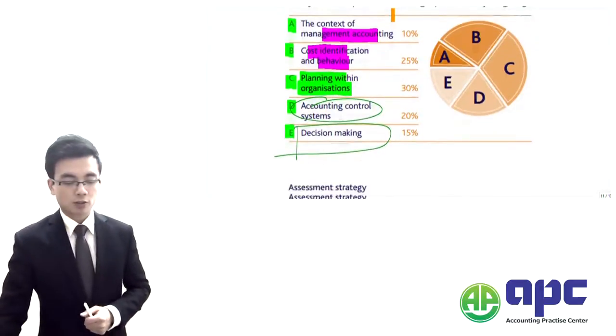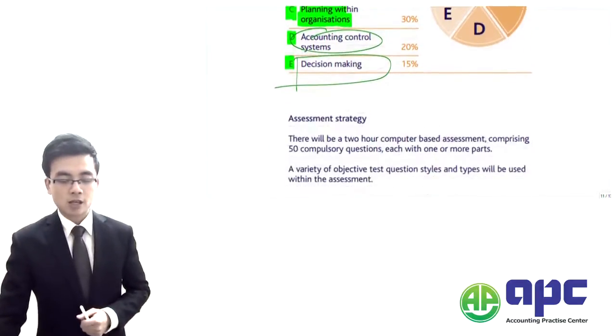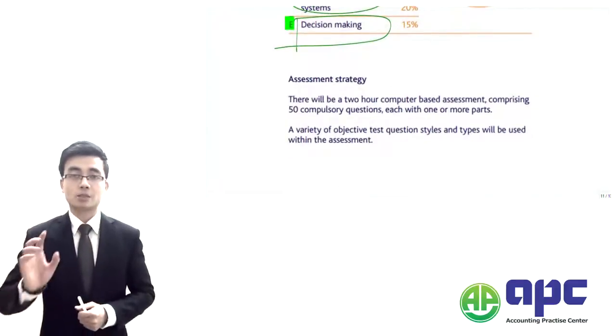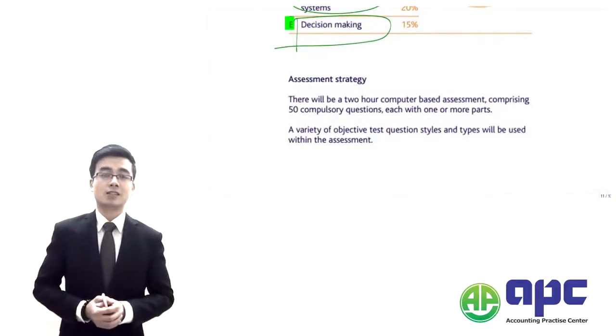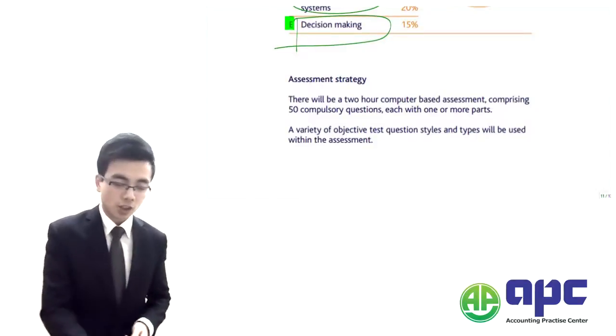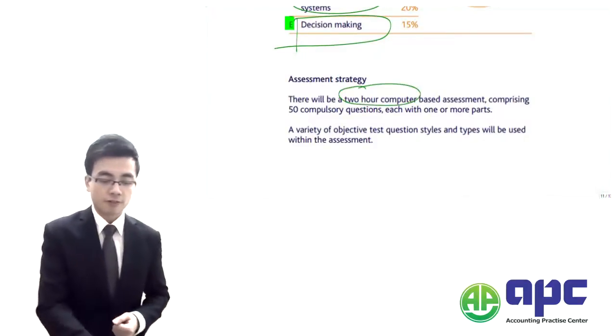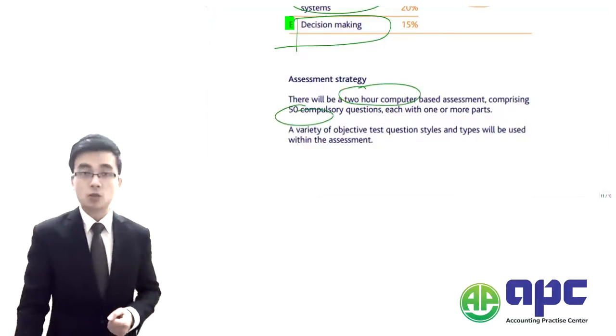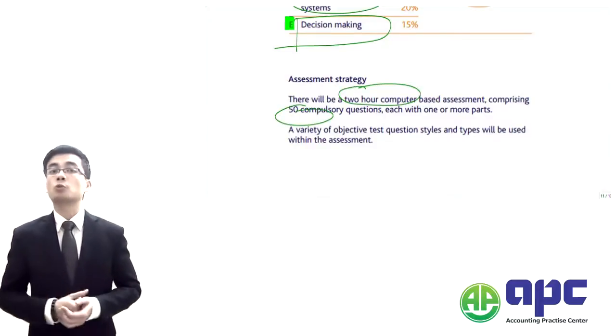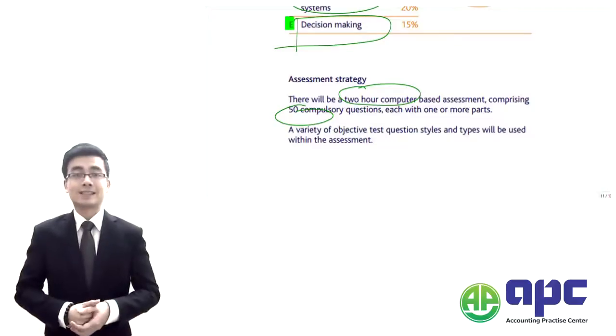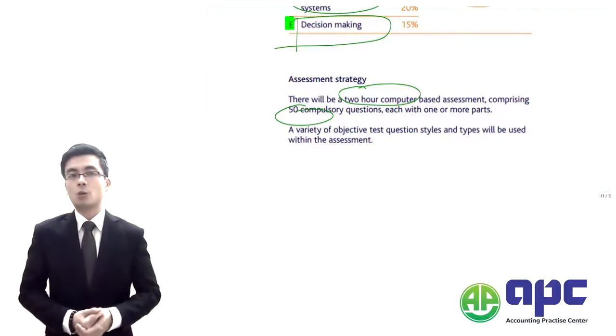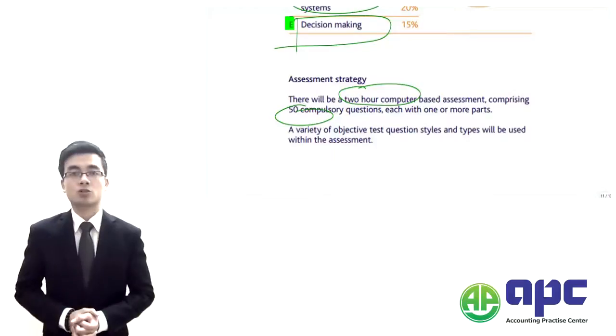Let's move on to the second part of this video, where we're going to look at how the CIMA C01 examiner is going to test you. You're given two hours to do this particular exam with 50 questions. The 50 questions will include, for example, multiple choice questions A, B, C and D. You're going to choose one of them, or maybe two. It's entirely up to the question.